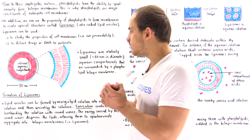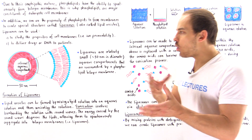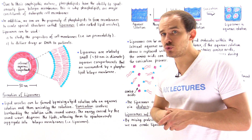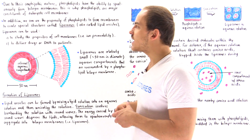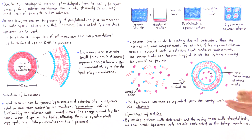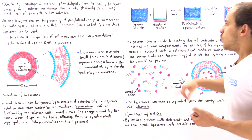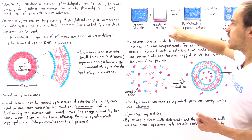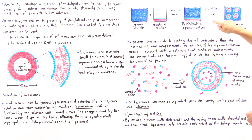We can also place specific molecules of interest into the internal aqueous compartment of a liposome. The only change to the procedure is using an aqueous solution that contains the molecule of interest instead of plain water. For example, if we want to insert amino acids into the internal compartment, we use an aqueous solution of amino acids, mix it with the phospholipid solution, and then sonicate.